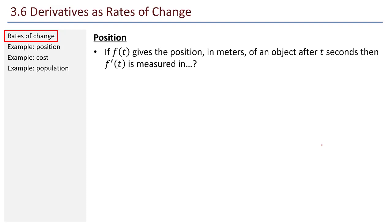How about in the context of position? If f(t) gives the position, say in meters, of an object after t seconds, then f'(t) is measured in what? What are the units for f'(t)? We might think that f' is like the derivative with respect to t of f, or we might write df/dt. And this gives us a clue to thinking about the units, because the function f gives us position in meters, so that's meters. And t is measured in seconds, so meters per second. So, whereas f is measured in meters, f' is measured in meters per second.